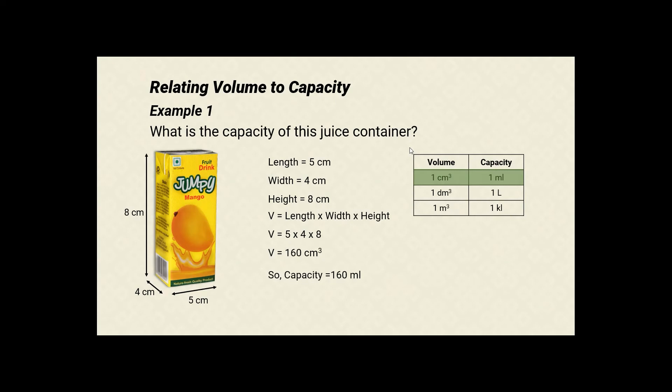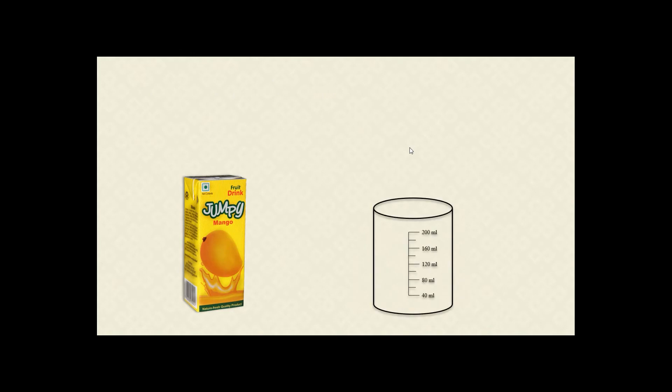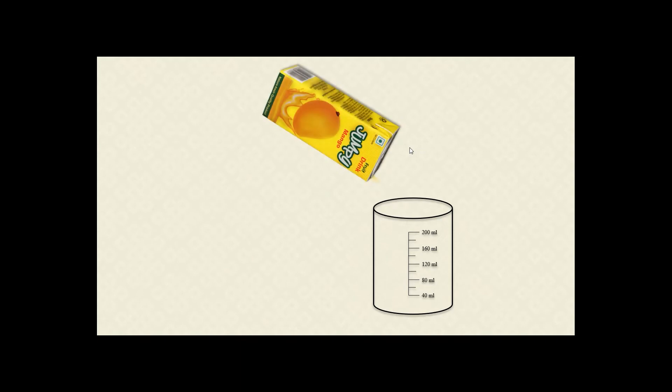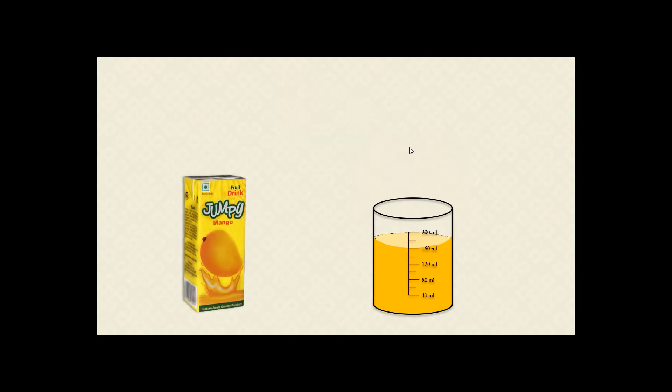Let us verify this conclusion through an illustration. This is the juice container and this is an empty beaker that has a capacity of 200 milliliters. Let's pour the juice from the container into the beaker. As you can see, the juice fills up exactly 160 milliliters of the beaker.